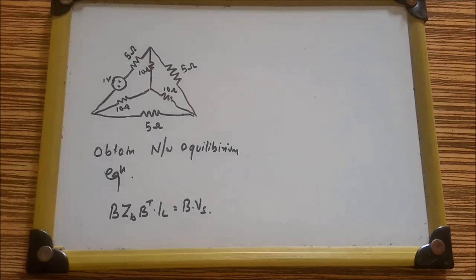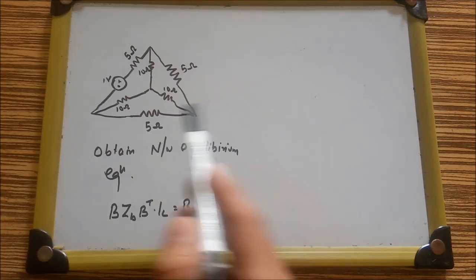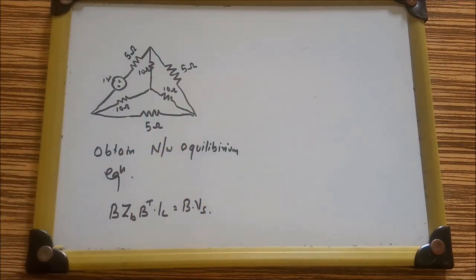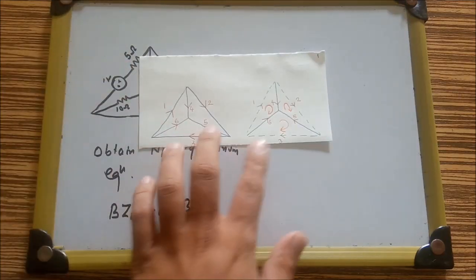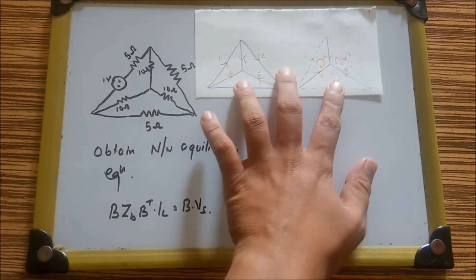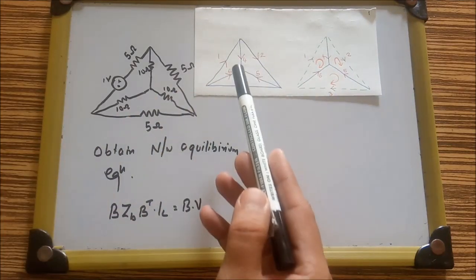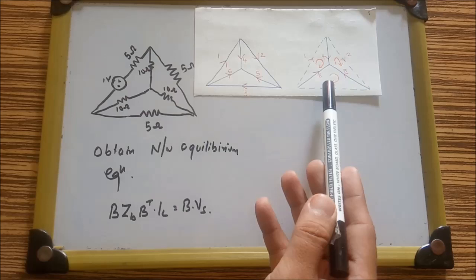The first step of the network equilibrium equation is to draw the graph. All the resistances and voltage sources are drawn as single lines. Afterward, we draw a tree. Here you can see I have drawn a graph and a tree.